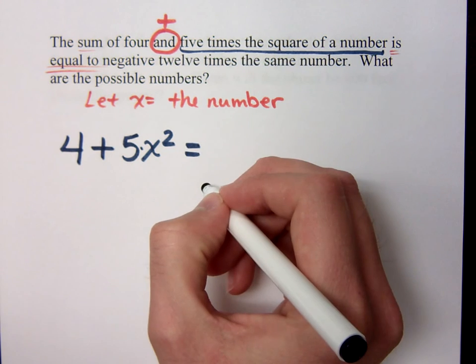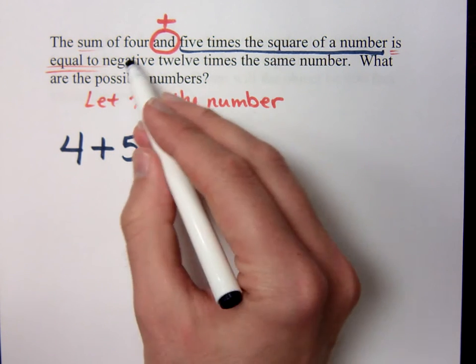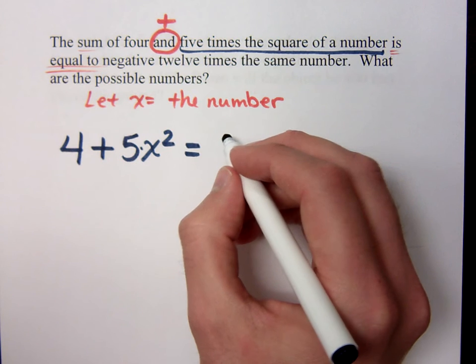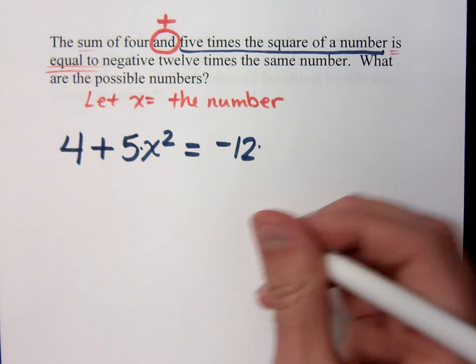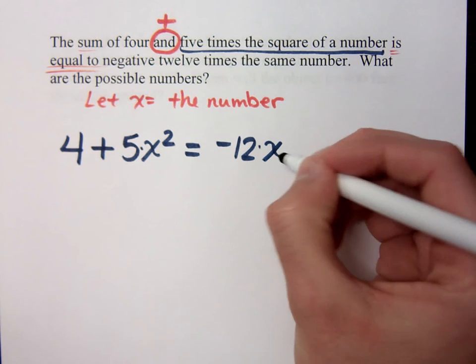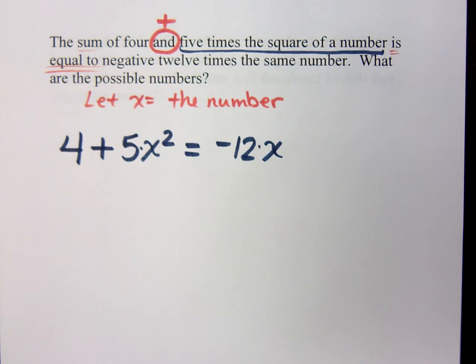And I've got the 'equal to' part. And this is going to equal negative 12 times the same number. So the number we've already mentioned before is just x. That's the missing number, the unknown number. It's what we're looking for.